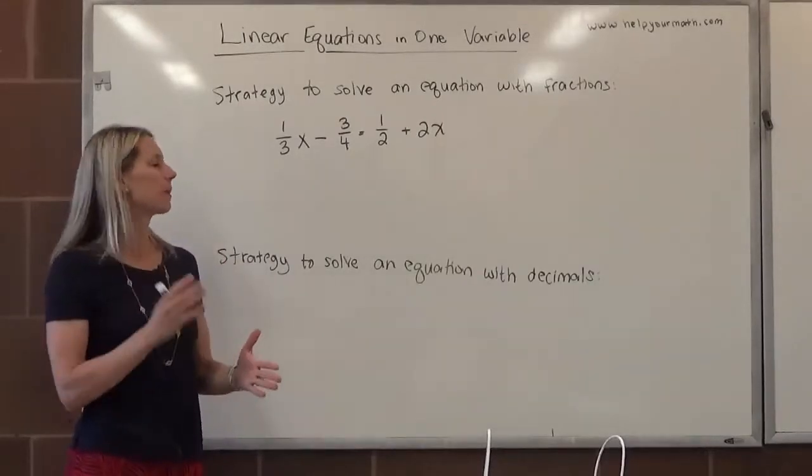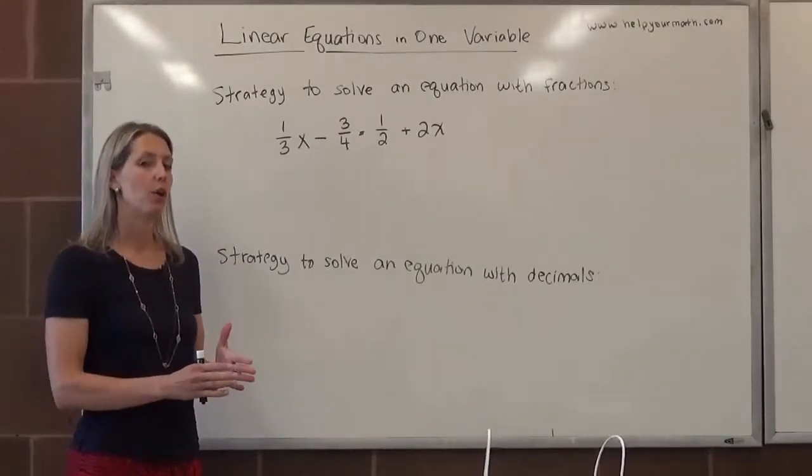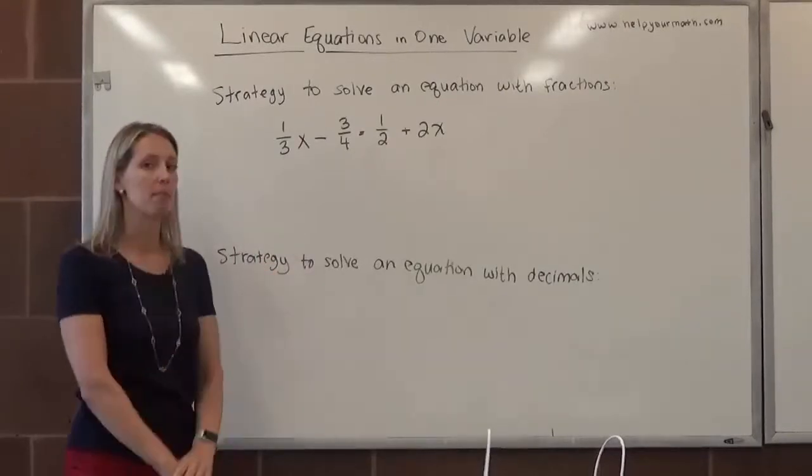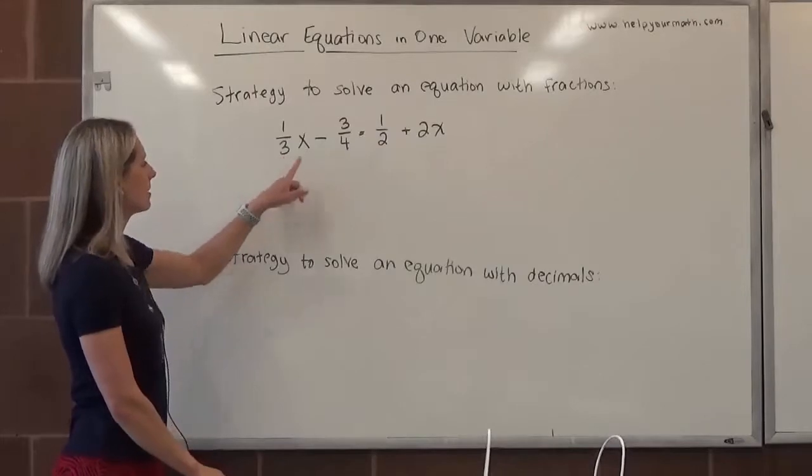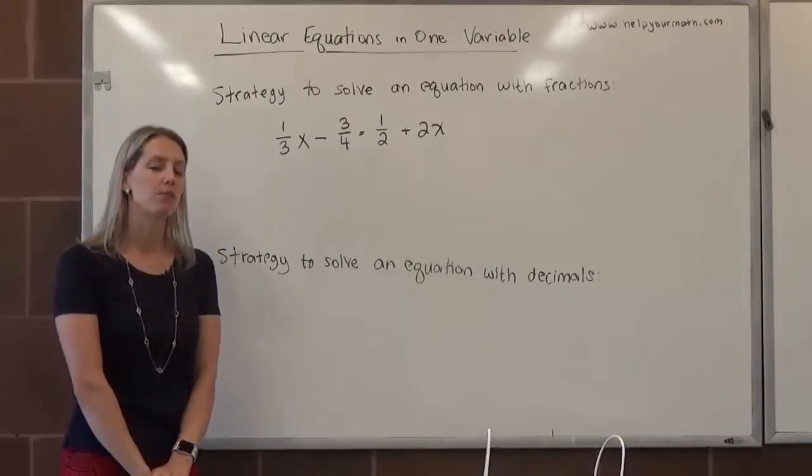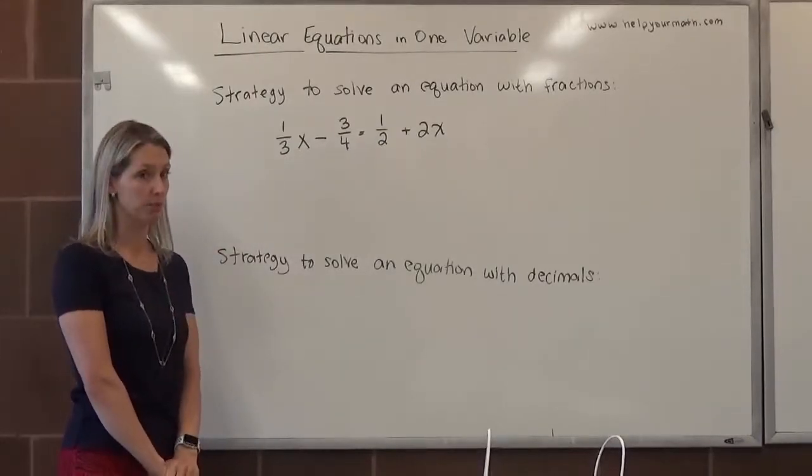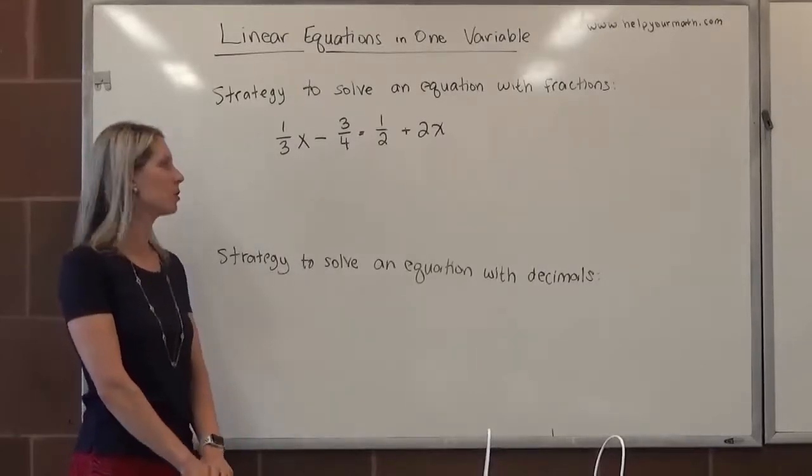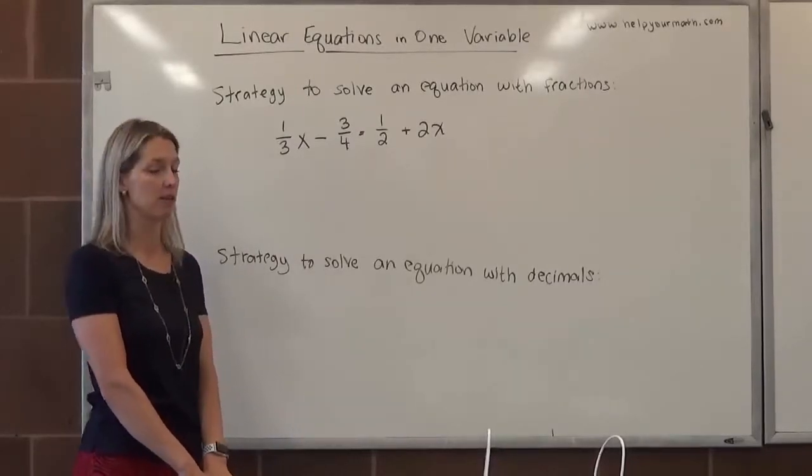Instead, what we're going to do is figure out what we could do to get rid of the denominators. How can we rewrite this using the multiplication property of equality? If we look at the denominators 3, 4, and 2, what's a number that 3, 4, and 2 all go into? There are infinitely many answers, but the smallest positive is 12.